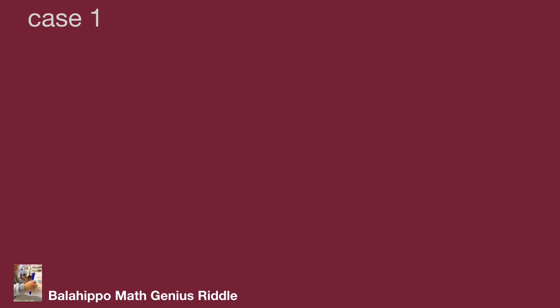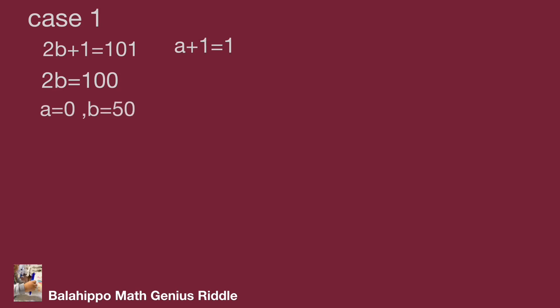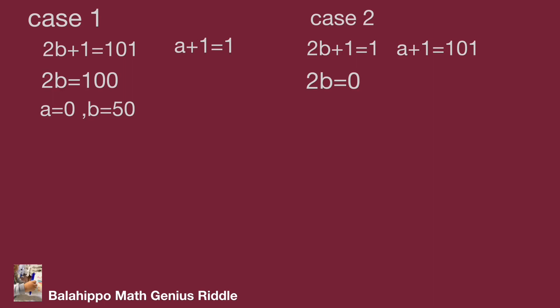In case 1, 2b plus 1 equal to 101 and a plus 1 equal to 1, so 2b becomes 100. Then we get a equal to 0 and b equal to 50. In case 2, 2b plus 1 equal to 1 and a plus 1 equal to 101, so 2b equal to 0. Then we get a equal to 100 and b equal to 0.